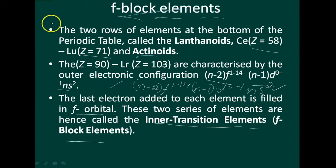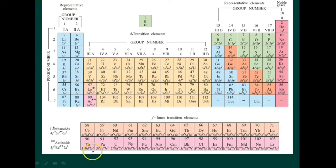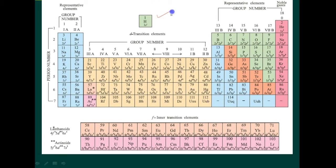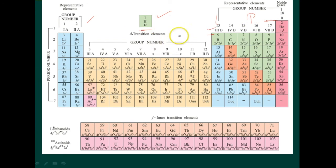In the modern periodic table, hydrogen is placed separately. Helium is also placed separately. From groups 13 to 17, these are the group numbers. Group 1 represents s-block elements; groups 13 to 18 are p-block elements. D-block elements come from groups 3 to 12, and f-block (inner transition) elements are separated at the bottom — lanthanoids and actinoids.